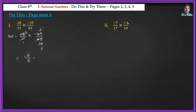Let us solve (-7/17) × (-1/10). Here, 7 and 17 are both prime numbers and cannot cancel with 10 or each other. So we multiply directly: (-7) × (-1) = +7, and 17 × 10 = 170. The answer is 7/170.